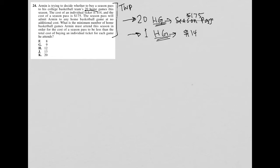I know that one home game is going to cost $14, but he can go to 20 home games for $175. We're trying to figure out how many home games makes the season pass make more sense than the individual. The question tells us exactly how we should translate this. What is the minimum number of home games?